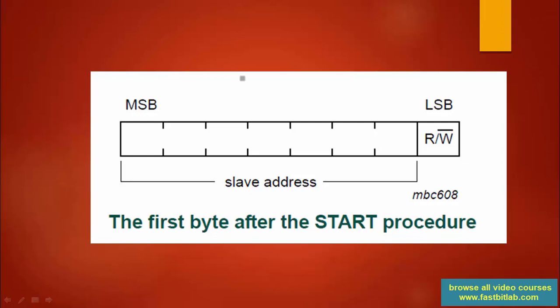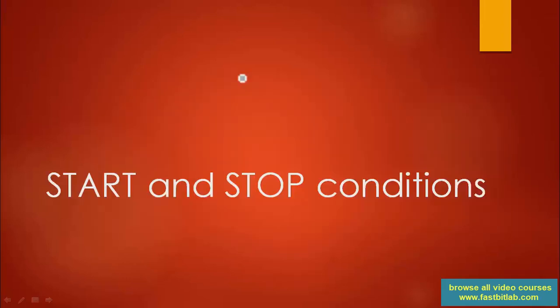The first byte after the start procedure is called the address phase, and the address phase is a collection of the slave address and the read-write bit. In the next lecture, let's understand what exactly the start and stop conditions look like.